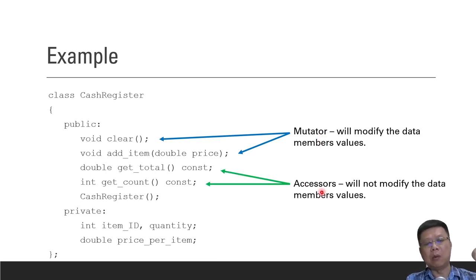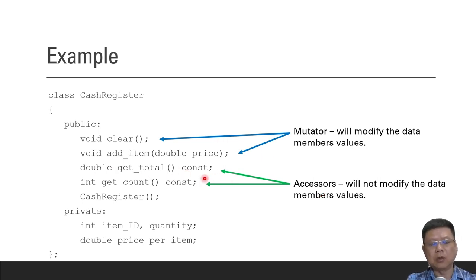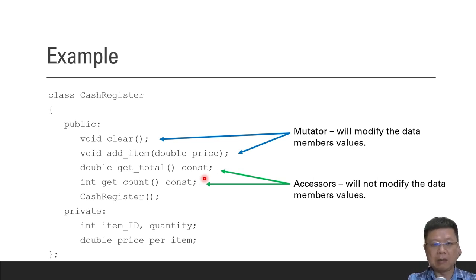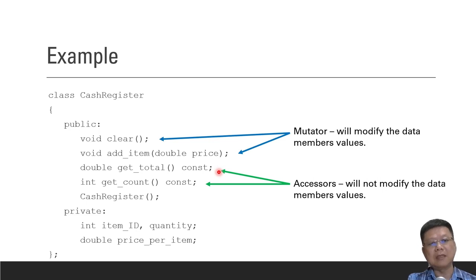Accessors mean that from our main function or from other functions, we are going to get that particular value. That is what we call an accessor. The value won't change in these functions — we just want to retrieve the value, not modify it.